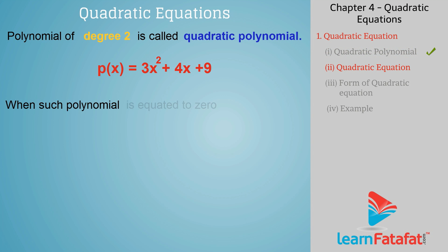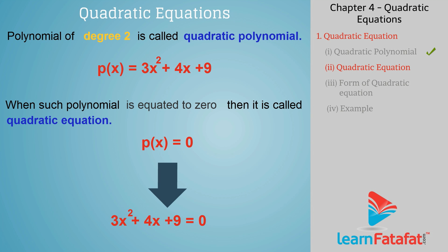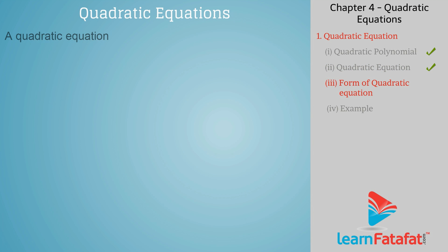When such a polynomial is equated to zero, then it is called a quadratic equation. For example, p(x) = 0, hence 3x² + 4x + 9 = 0. A quadratic equation in the variable x is an equation of the form